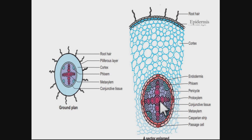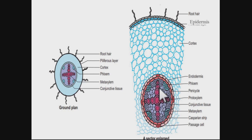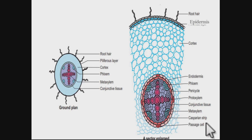Remember that proto xylem faces towards the outer side while meta xylem is towards the center — this condition is called exarch condition. The endodermis cell just opposite to the proto xylem is called a passage cell, and it lacks suberin deposition. Through these passage cells, the lateral flow of ions, nutrients, and water takes place.